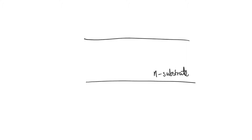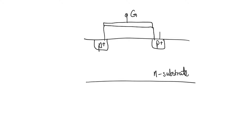A PMOS is fabricated in an N-type substrate. It has P+ sources and drains, so P+ instead of N+, and the channel will thus be P-type. In order to attract holes to form the channel, we need to apply a negative gate voltage — or at least a gate voltage that is negative relative to the source. So if we apply a gate voltage that is low, it will attract holes towards the oxide forming a conductive channel.